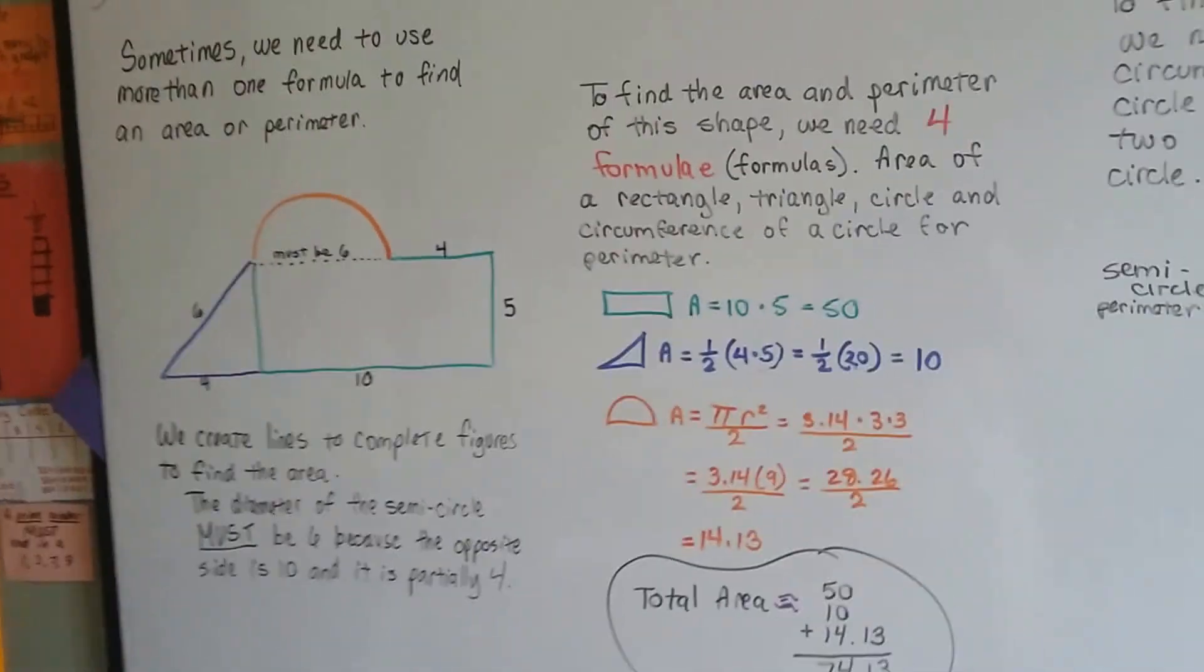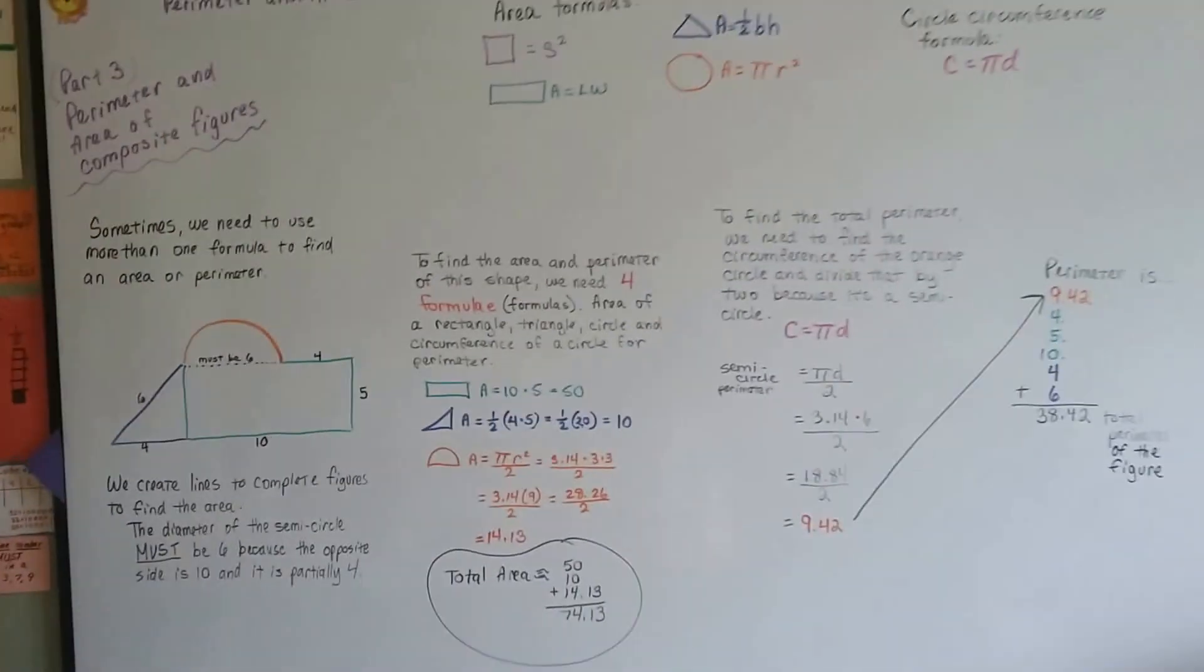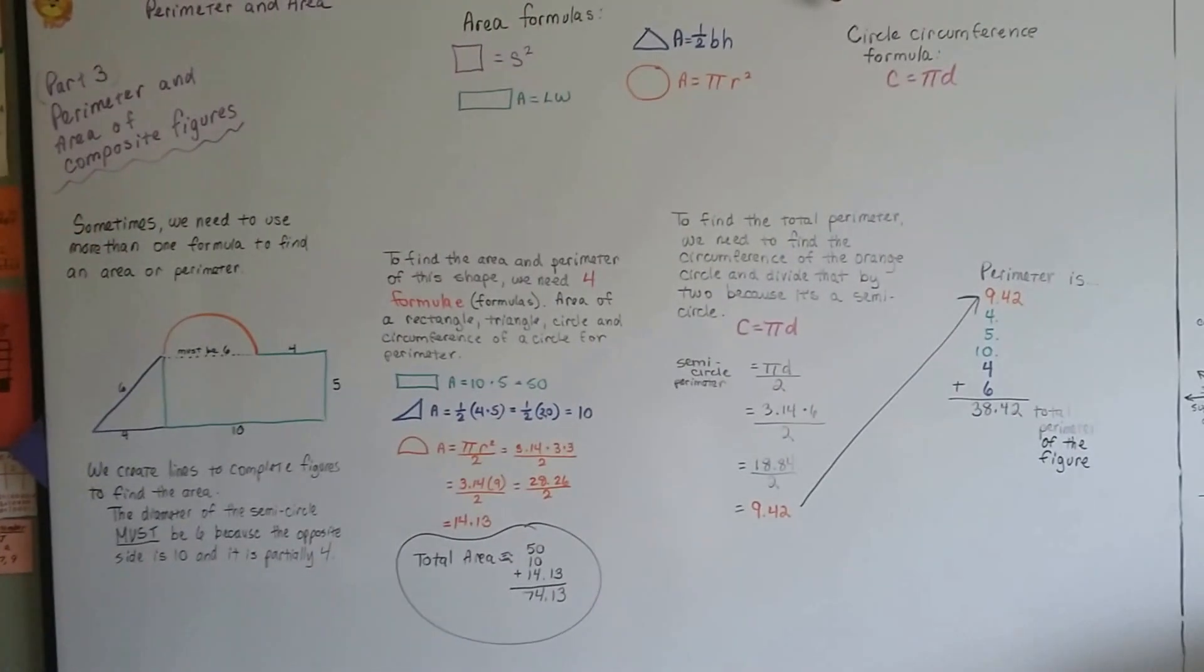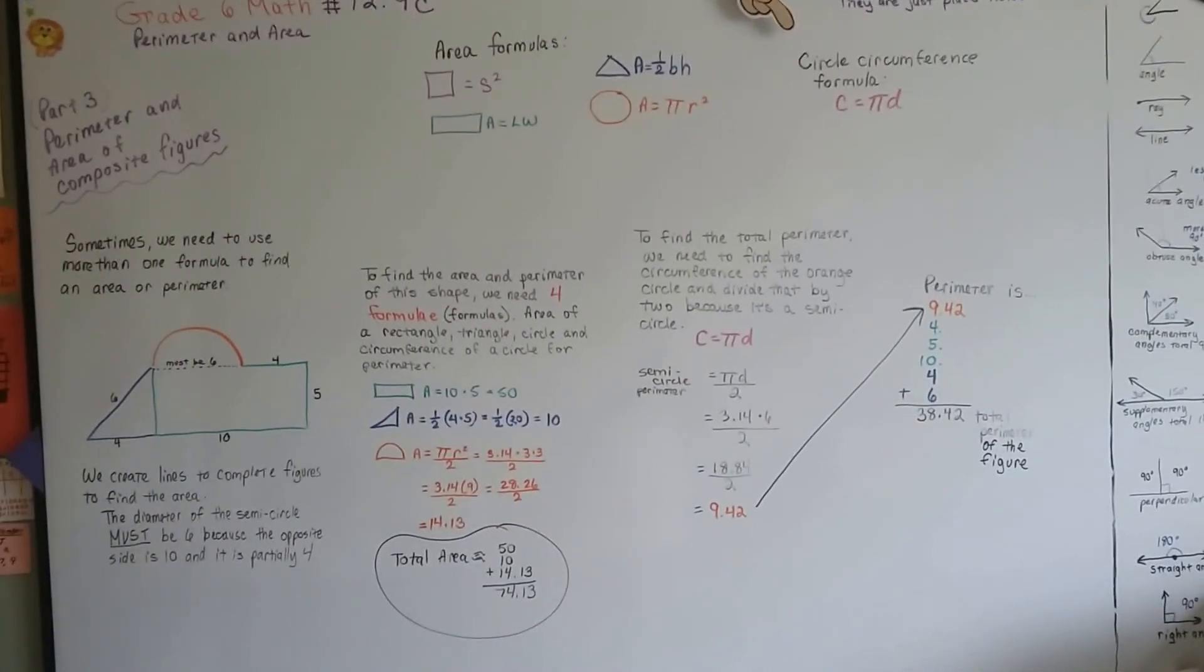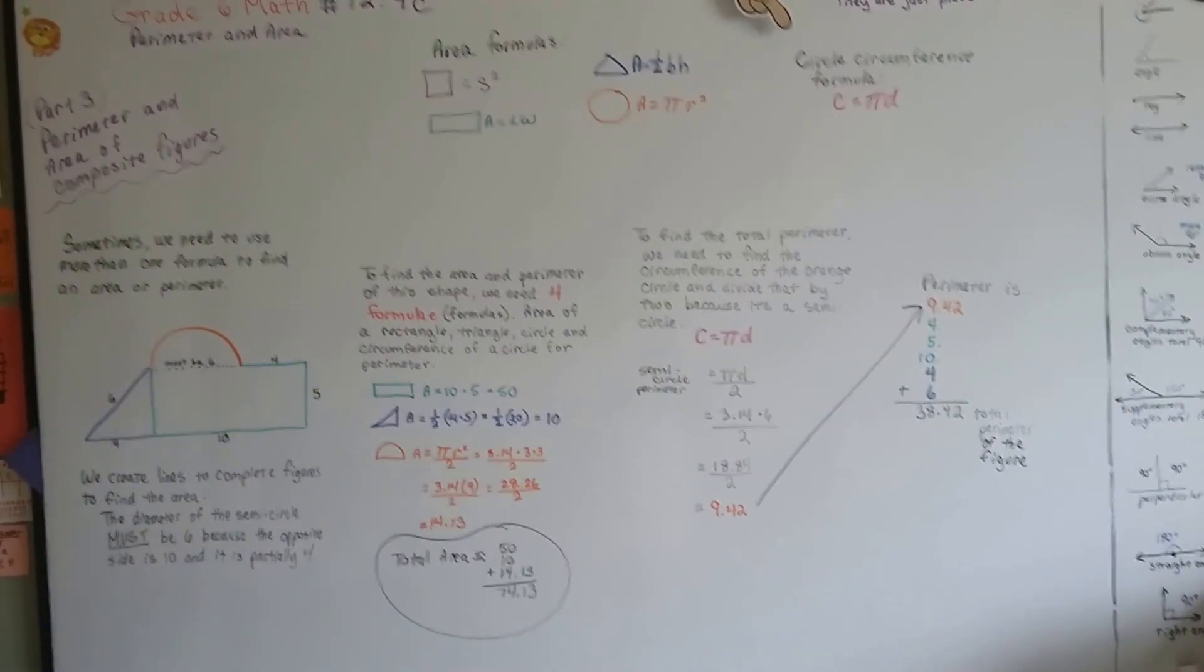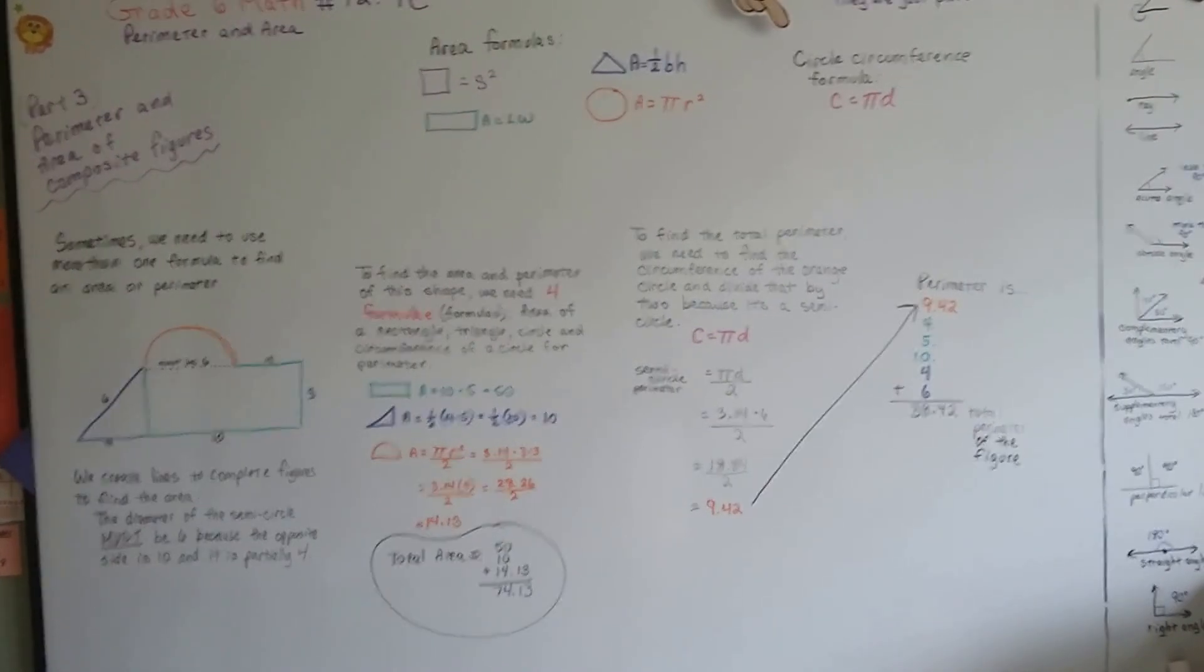All right, so that is part 3, perimeter and area of composite figures. I promise there's not going to be a part 4. It's just that I really felt we needed to dig into this topic to really explain it. And I'll see you at 12.10. We're almost finished with this chapter. I'll see you there. Bye.